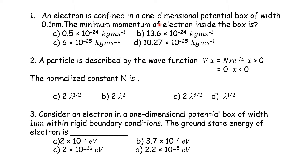Question 1: An electron is confined in a one-dimensional potential box of width 0.1 nanometer. The minimum momentum of the electron inside the box. To find the minimum momentum, we use the Heisenberg uncertainty principle: Δx · Δpx = ℏ/2.